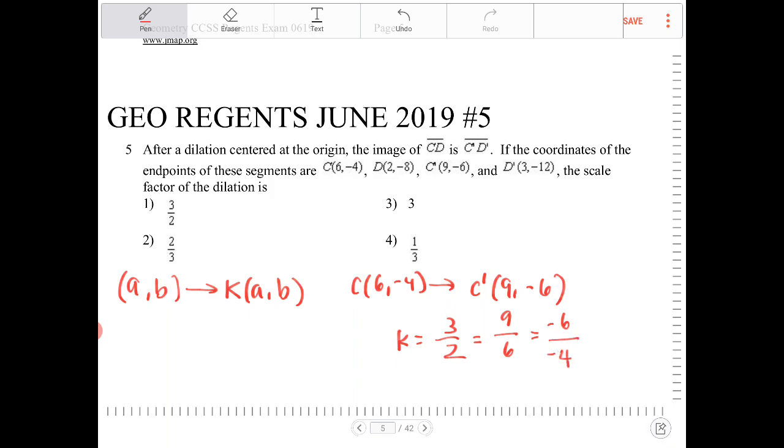And this is going to hold true for all the coordinates, not just C but for D as well if the scale factor was applied uniformly. So if I take D which is 2 comma negative 8,